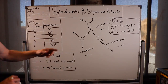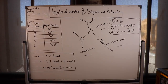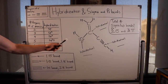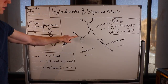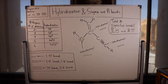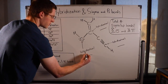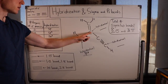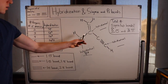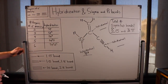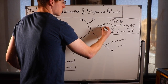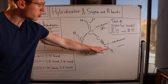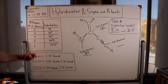Now let's look at hybridization. For this oxygen, we count the regions of electron density around it: one, two, three, four regions — so it is sp3 hybridized. This carbon here has one, two, three regions of electron density, so it is sp2 hybridized. And this last carbon has one, two regions of electron density surrounding it, so it is sp hybridized.